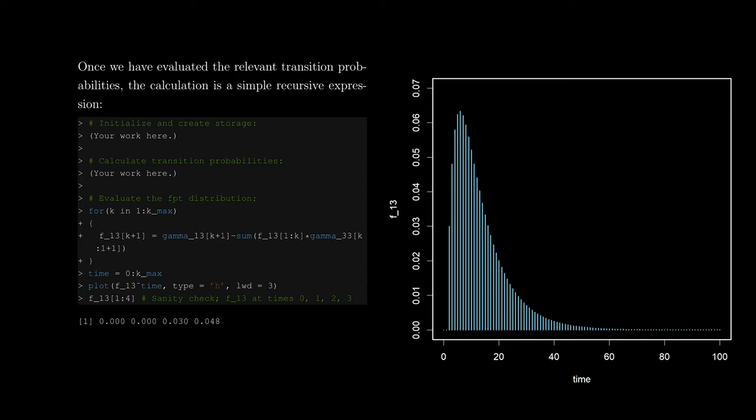We have done the calculation for our example chain up to some chosen k_max, and plotting the resulting probabilities, we see a skewed discrete distribution. As a sanity check, since the chain starts in state one and it will take at least two steps to get to state three, the probability of first passage in one step is thus zero. First passage in two steps can only occur in one way, so the probability must be 0.1 × 0.3, which we can read off from the transition probability matrix.